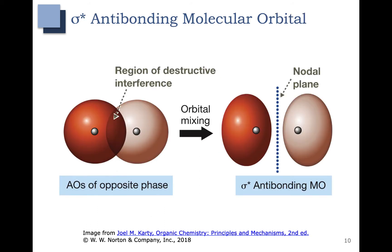The other type of molecular orbital is a sigma antibonding molecular orbital, usually represented by a little star, so it's often called the sigma star. In this situation, we have atomic orbitals of opposite phases, represented by the dark and light colors coming together. This means that there is destructive interference. When these orbitals combine and mix, they essentially cancel each other out, and you end up with a nodal plane between the two lobes.